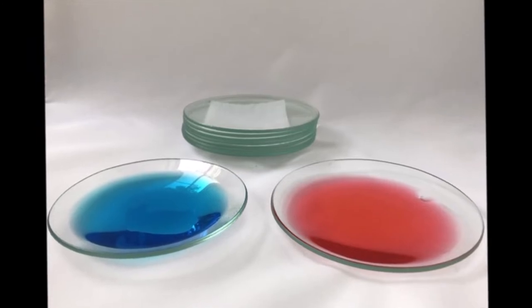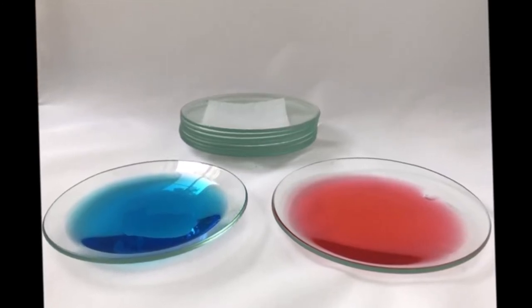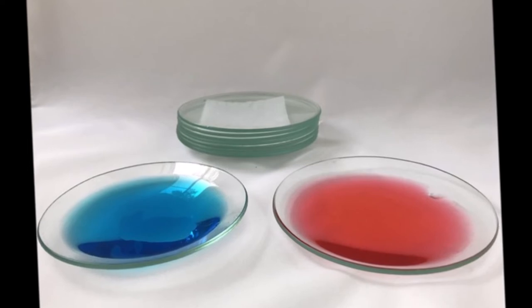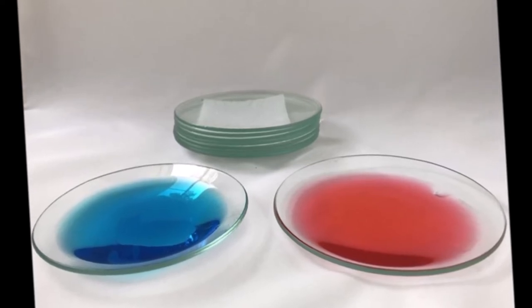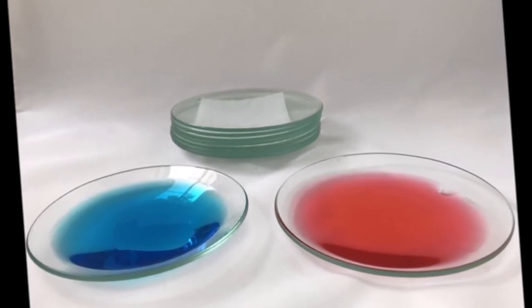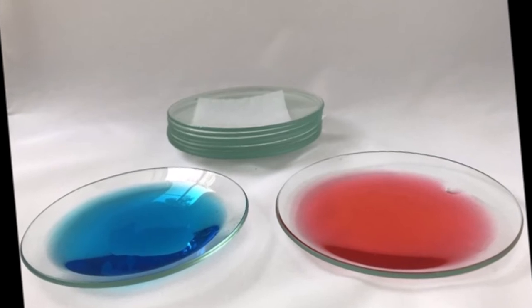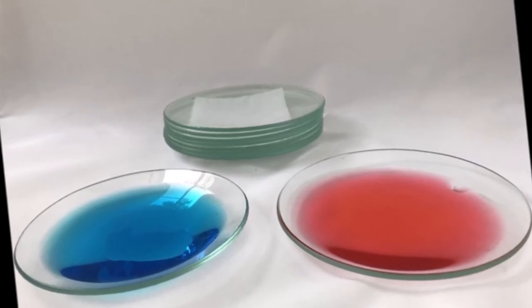In hematology lab, watch glass plays a major role. The required amount of diluting fluid is transferred into the watch glass for further dilution of the blood sample. The reason behind it is to avoid contamination of the entire diluting fluid which is present in the bottle.